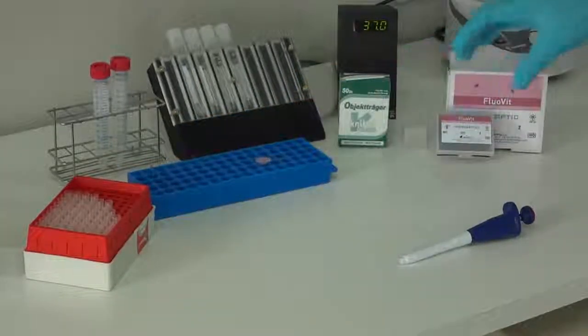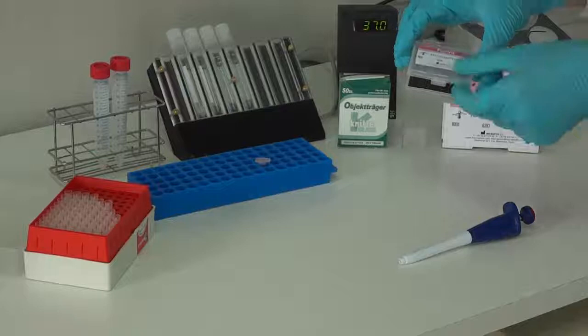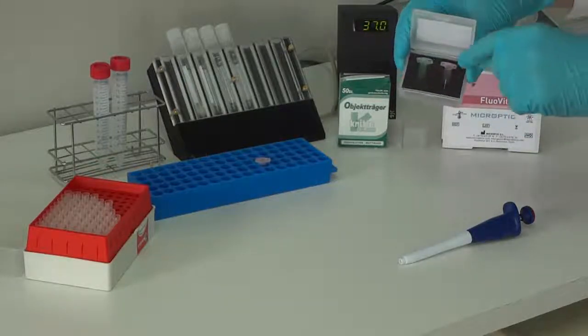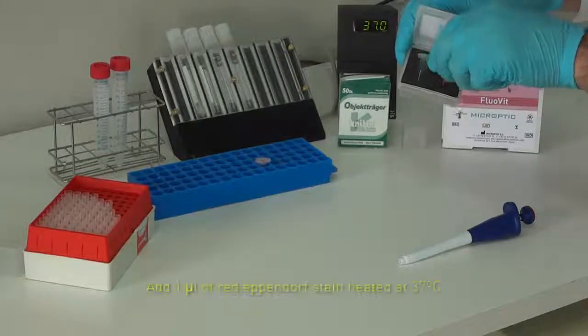Take the Eppendorf from the incubator and add one microliter of red Eppendorf stain previously heated at 37 degrees centigrade.